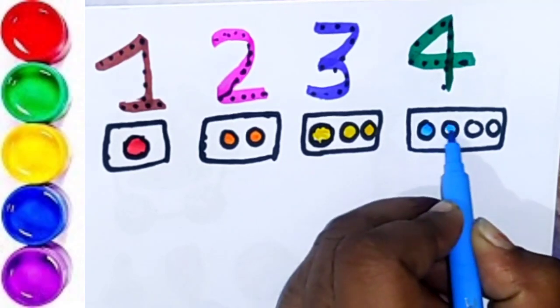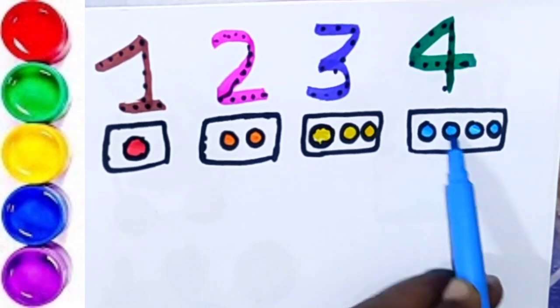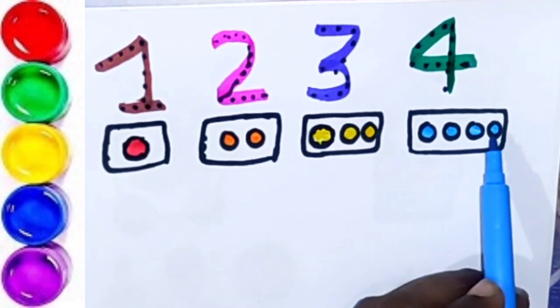One, two, three, four. One, two, three, four. Four circle.